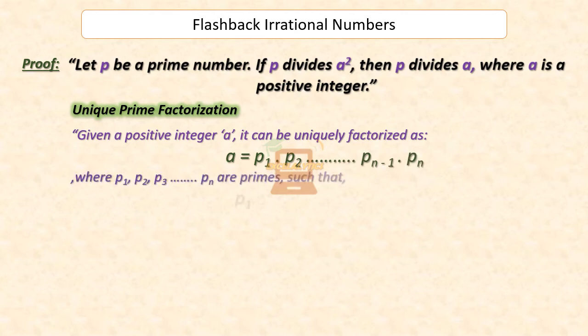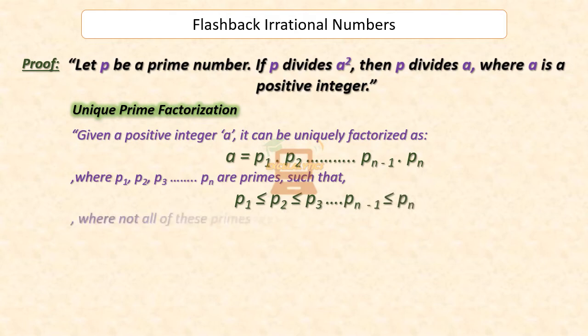Such that P1 ≤ P2 ≤ P3 ≤ ... ≤ Pn-1 ≤ Pn, which means that not all of these primes are necessarily distinct.